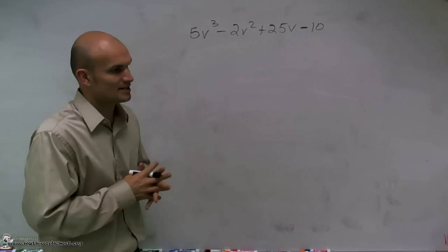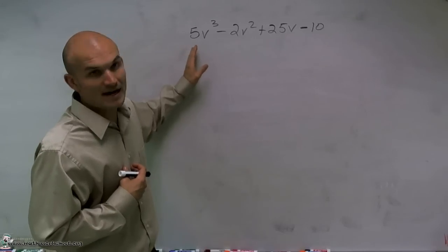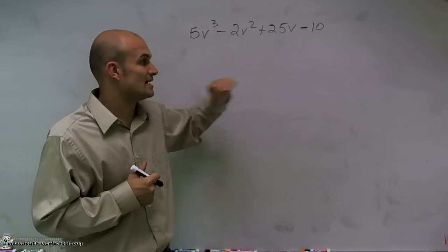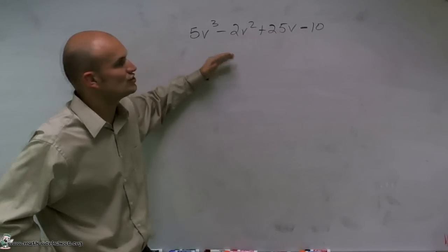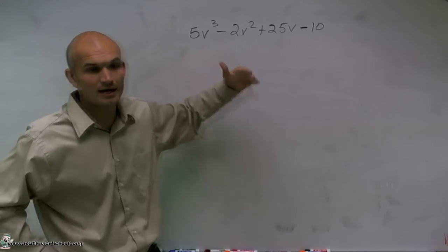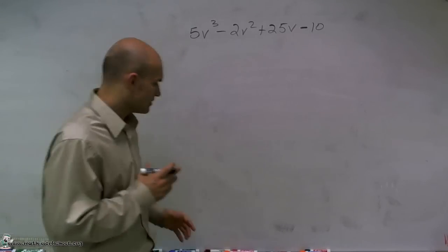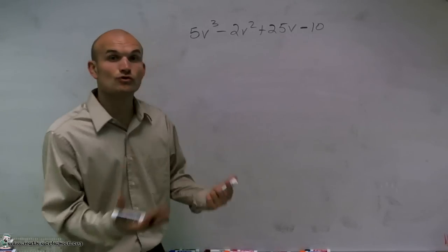So what factoring by grouping is, is just a simple way to look at factoring. We have our four terms where we can't factor out a GCF. Because I look at this, each one of these four terms, they don't share any greatest common factors, either in their numbers or their terms.